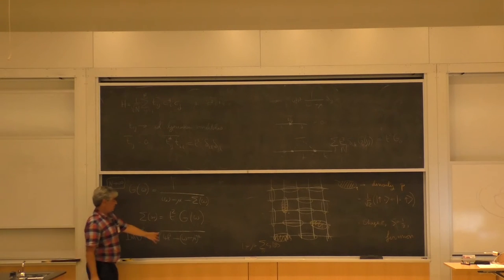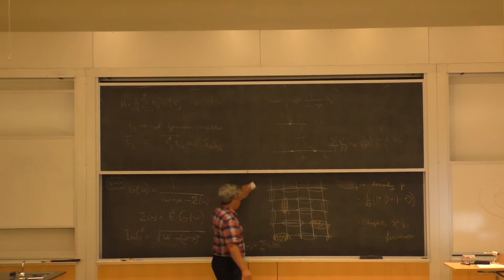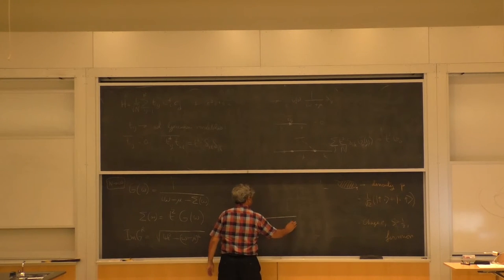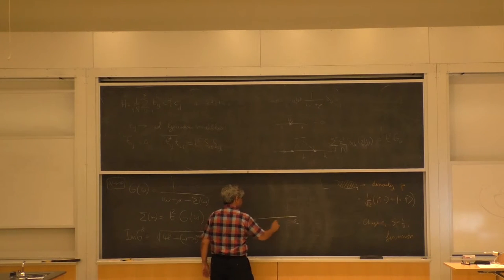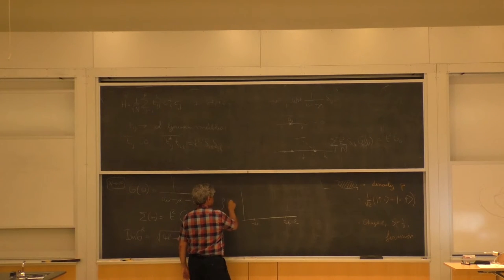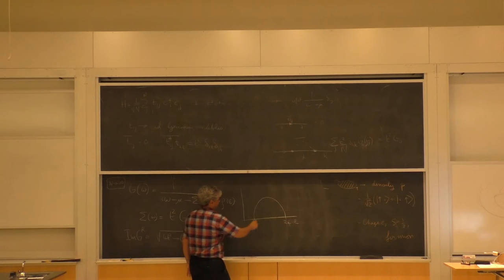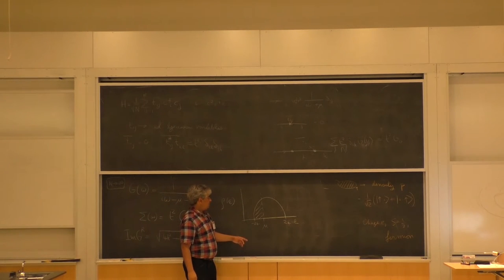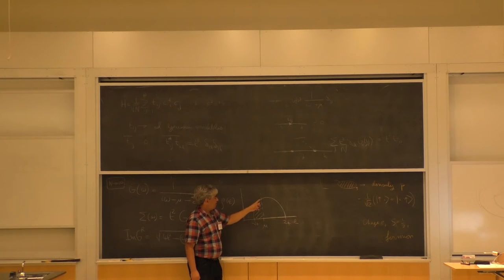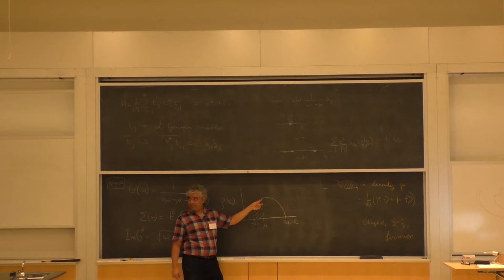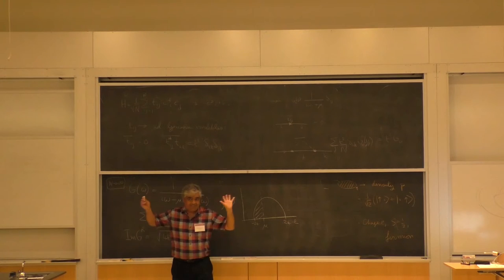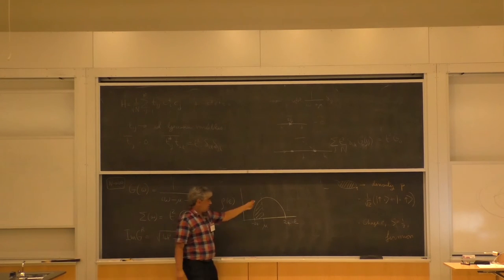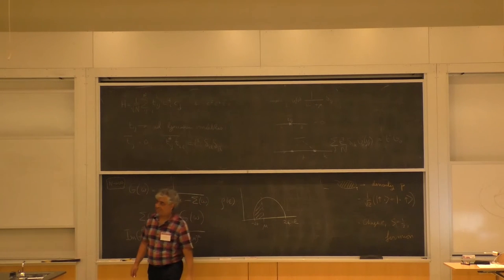So what this is, it's called the famous semicircular density of states. If I look at the density of states of this model, it goes from minus 2T to plus 2T — it's a semicircular thing. You've got some chemical potential here — these are the filled states, these are the empty states, there's a Fermi energy. Right at the Fermi energy, the imaginary part of the Green's function is finite. So that's a very quick solution of a trivial model — a random matrix model gives you a semicircular density of states.